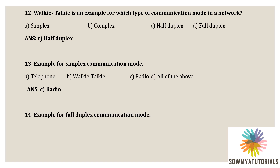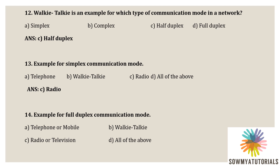Next question: example for the full duplex mode. Options are option A - telephone or mobile, option B - walkie-talkie, option C - radio or television, option D - all of the above. The correct option is option A, telephone or mobile, because with a telephone or mobile the sender can send the data and also receive the data simultaneously. In a mobile we can send data and also receive from another receiver, accessing both sender and receiver roles. So the correct option is telephone or mobile.